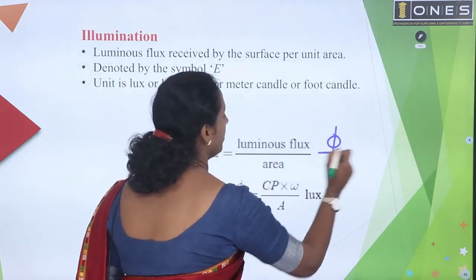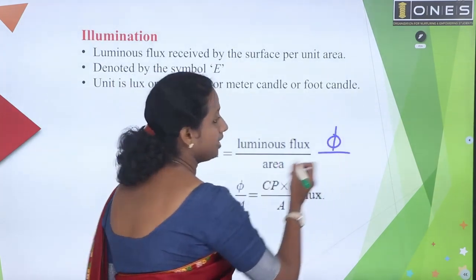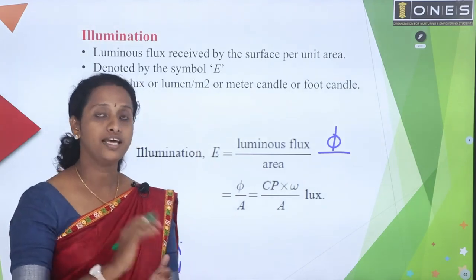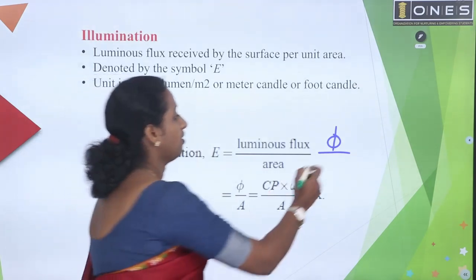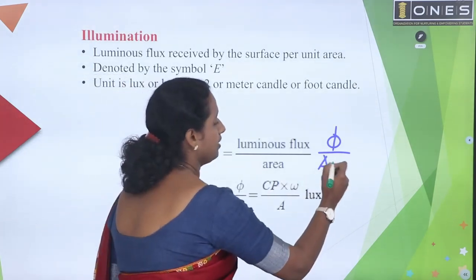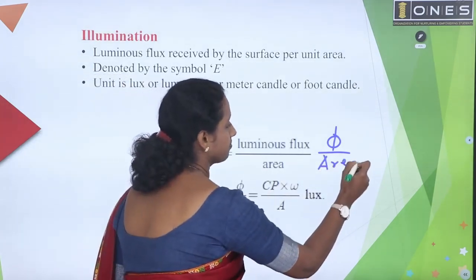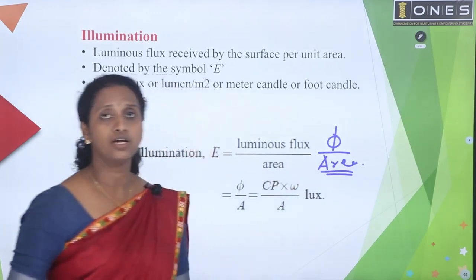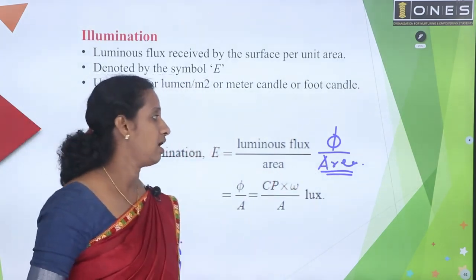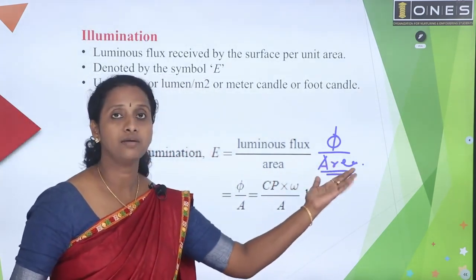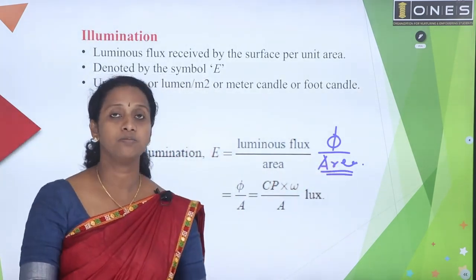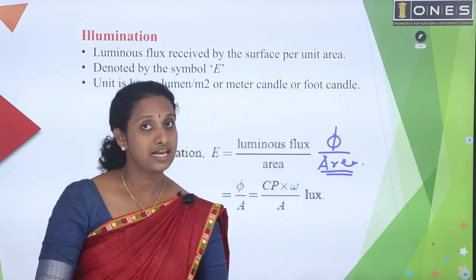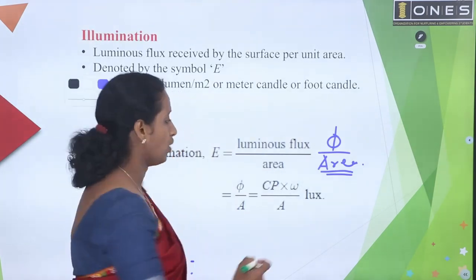Illumination is luminous flux divided by area. This room is the area — we need to use meter square. What is the unit? Lumens per meter square. That is lux, L-U-X.